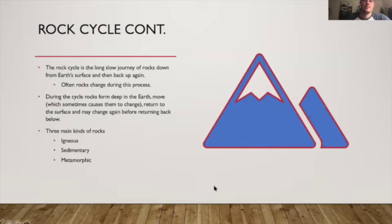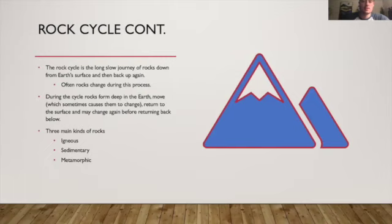To summarize, the rock cycle is a slow, long journey of rocks down from the Earth's surface and then back up again. The rocks often change during this process — not all rocks do every time, but that's what typically happens. During this cycle, rocks form deep in the Earth, causing them to change, return to the surface, and come back below again. The three main kinds of rocks are igneous, sedimentary, and metamorphic.